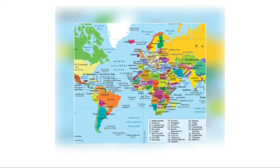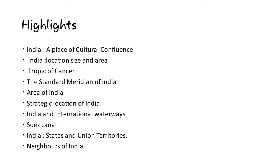This is the world map. Here you can see our country India in yellow color. Try to locate the Suez Canal, which we want to study in this chapter.